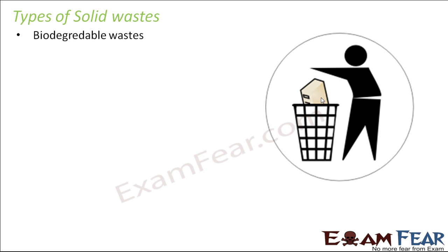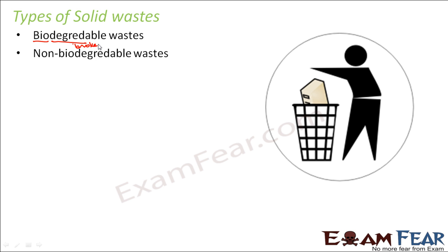The two types are biodegradable and non-biodegradable. Biodegradable means something which can be degraded — broken down — by living organisms. Non-biodegradable means it cannot be broken down. Let us see which wastes fall under the category of biodegradable and which fall under the category of non-biodegradable.